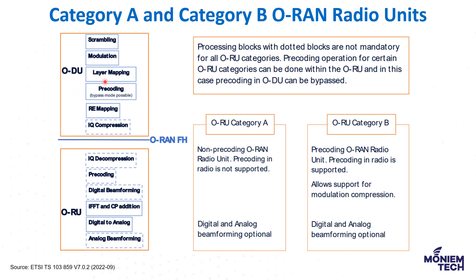You can see here the pre-coding function. If the pre-coding function is handled by the ORU, that means it will be category B. If it is handled by the ODU, it is called ORU category A. So the categorization is based on where the pre-coding function is located — either above the interface in the ODU, or below the interface in the ORU. ORUs for which pre-coding is not done in the ORU are called category A ORUs.